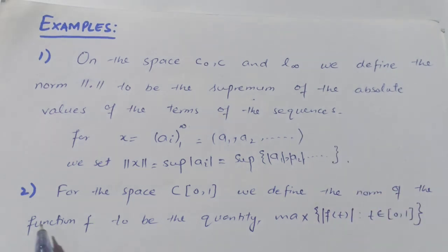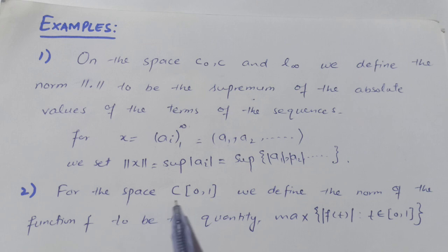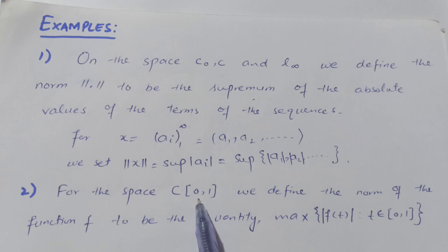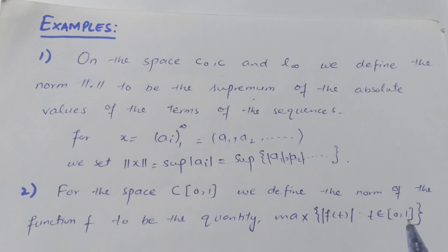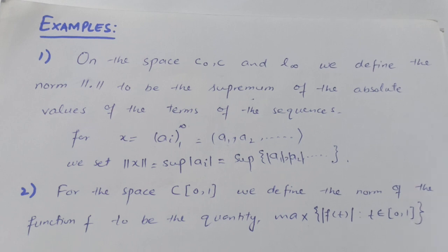The second example is the space C[0,1], the set of all continuous functions on the unit interval [0,1]. We define the norm of a function f to be ||f|| = max |f(t)| where t ∈ [0, 1].